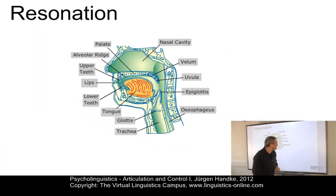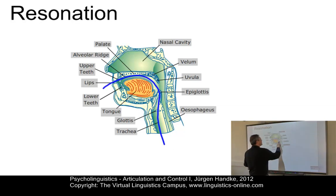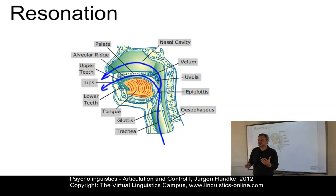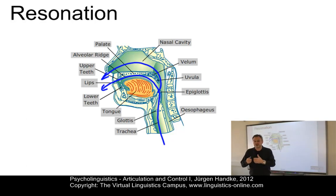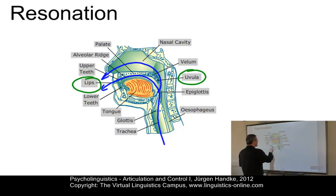Let's continue with resonation, the final component. Once the air passes through the trachea and the glottis, it enters a long tubular structure known as the vocal tract — the passage that can also involve the nose. Here the airstream is affected by the action of several mobile organs, the active articulators, which are actively involved in the production of speech sounds. The active articulators include the lips, which are mobile; the uvula, which is mobile; the glottis, as we've already seen; and the tongue.